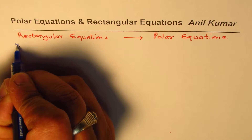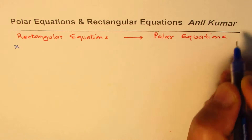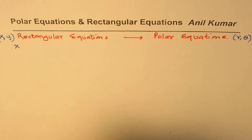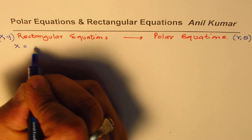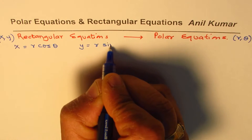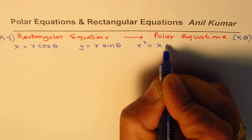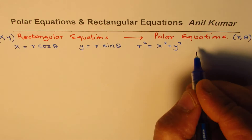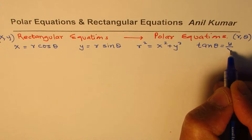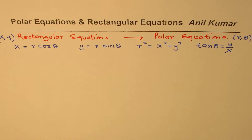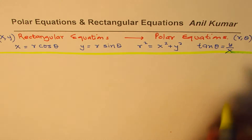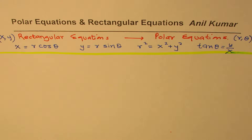In rectangular we have x and y; in polar we are talking about r and theta. So we are converting our x's and y's to r and theta. That is the basic concept, where x equals r cos theta, y equals r sin theta, r squared equals x squared plus y squared, and we could also say tan theta is the ratio of y and x. These are the basic relations which should help us do this transformation of rectangular to polar equations.